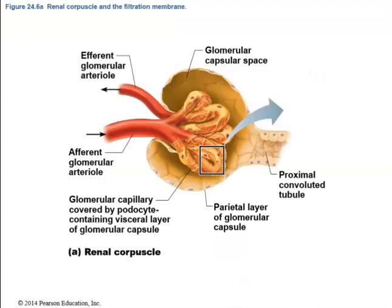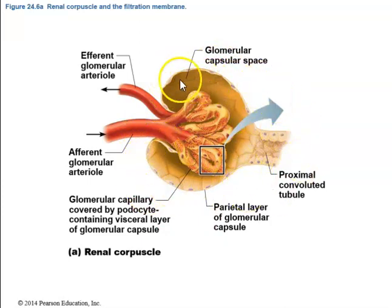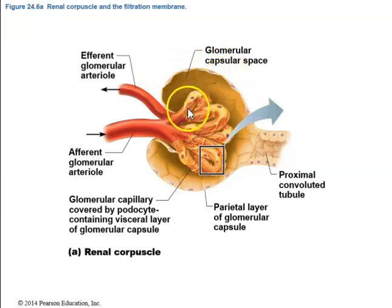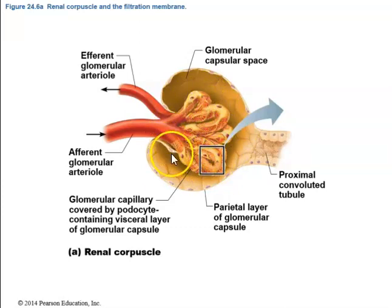The renal corpuscle shows the glomerulus surrounded by the glomerular or Bowman's capsule — similar to a fist surrounded by the other hand. The outer parietal layer and inner visceral layer are separated by a capsular space. The first part of the renal tubule associated with the glomerular capsule is the proximal convoluted tubule — 'proximal' meaning closest to the renal corpuscle.